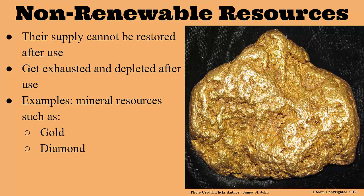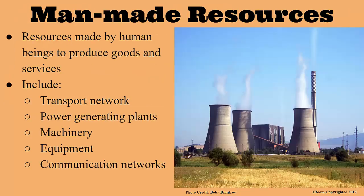Next are man-made resources, also known as artificial resources. They have been made by humans to produce goods and services. Examples include transport networks, power generation plants, machinery, equipment, and communication networks. A train is identified as a man-made resource.